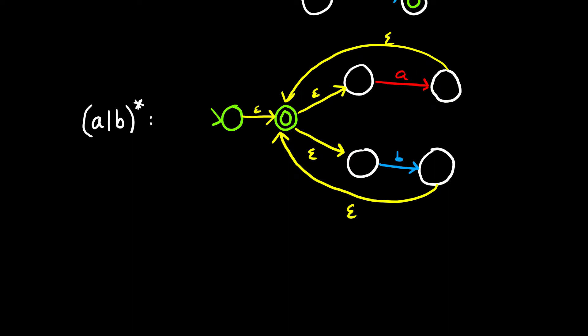So to review what we did: we connected those accept states to our start state, then we made those just regular states — not accept states. We made our start state an accept state, and then we made a new start state that connected to our old start state, which is no longer a start state. Now we need to look at the other parts of our regex: A concatenated with A, and then that whole thing concatenated with the Kleene star result, and then that whole thing concatenated with B concatenated with B.